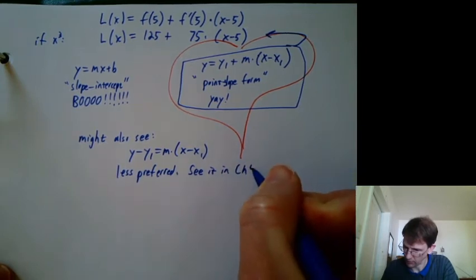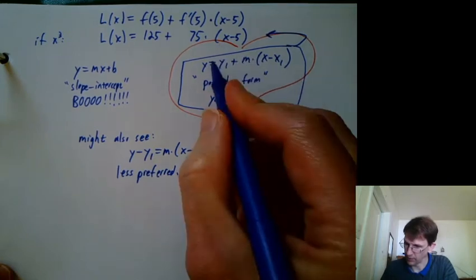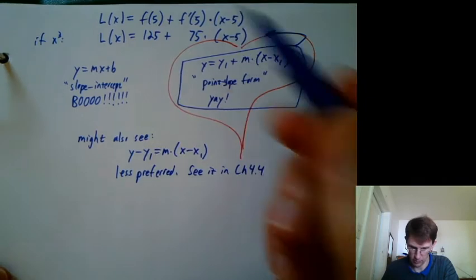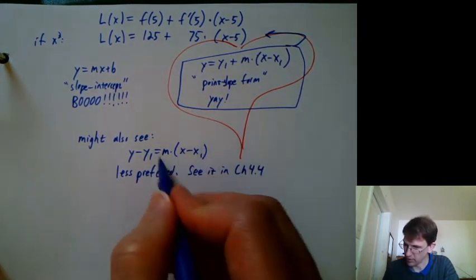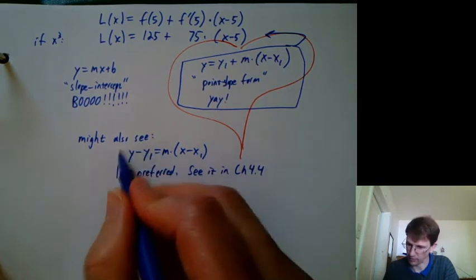But for the most part, we want to use this version of point-slope form because it gives us a direct value for the final y value, which we call L of x, rather than giving us the change and then us having to add the change to the y1 value.